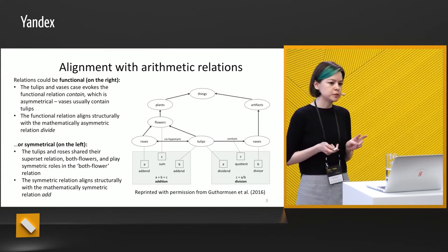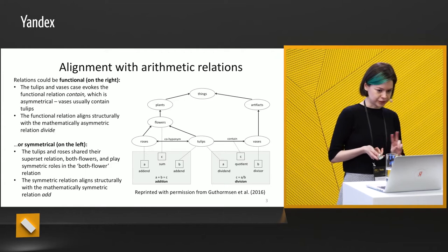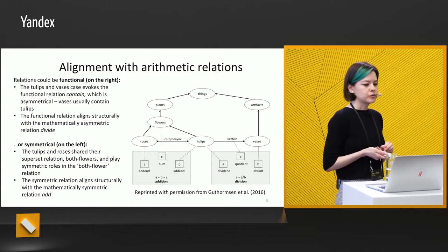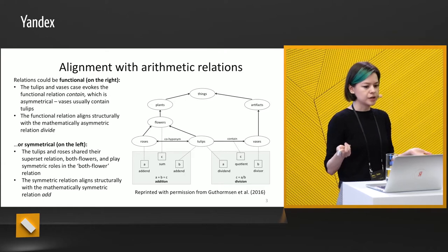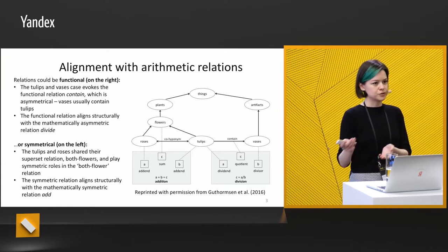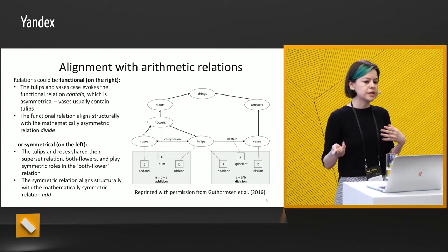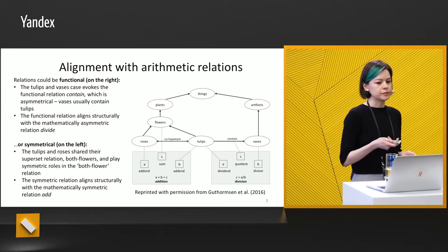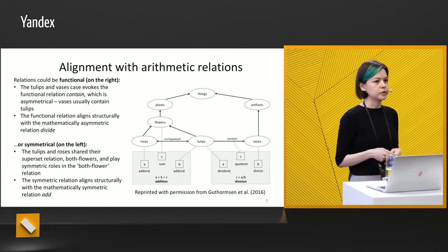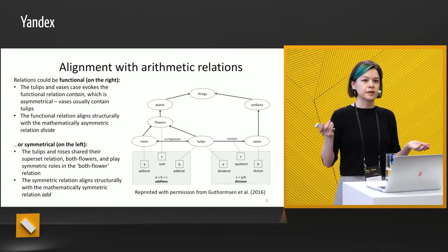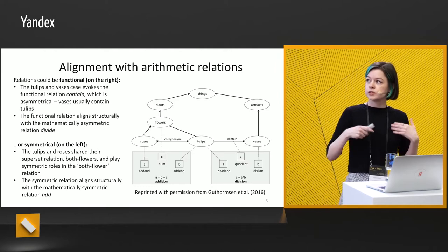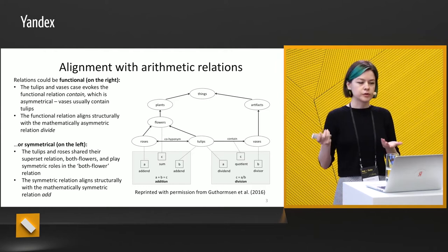Relations between objects can be of two kinds. First, this is a functional relationship. For example, tulips and vases evoke the functional relation 'contained in', because usually vases contain tulips. This relation is asymmetrical. The functional relation aligns structurally with the mathematically asymmetrical relation 'divide'. So if we see objects that hold a functional relationship, we usually solve the problem on division.